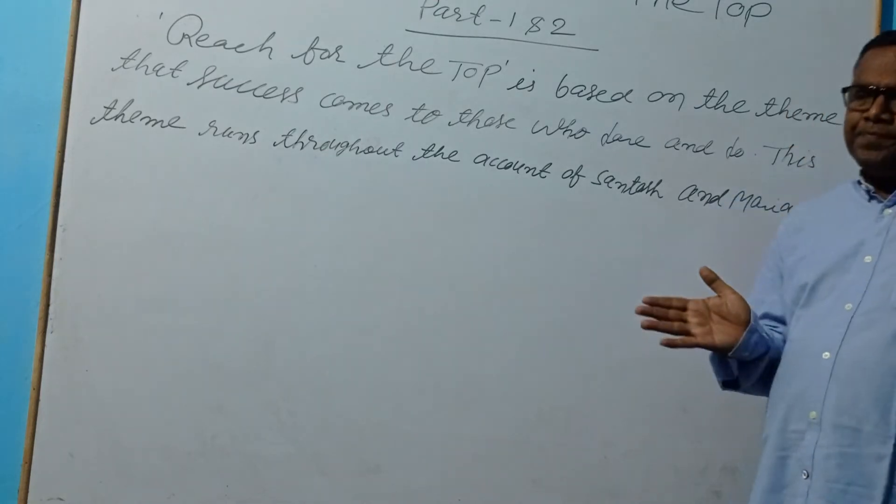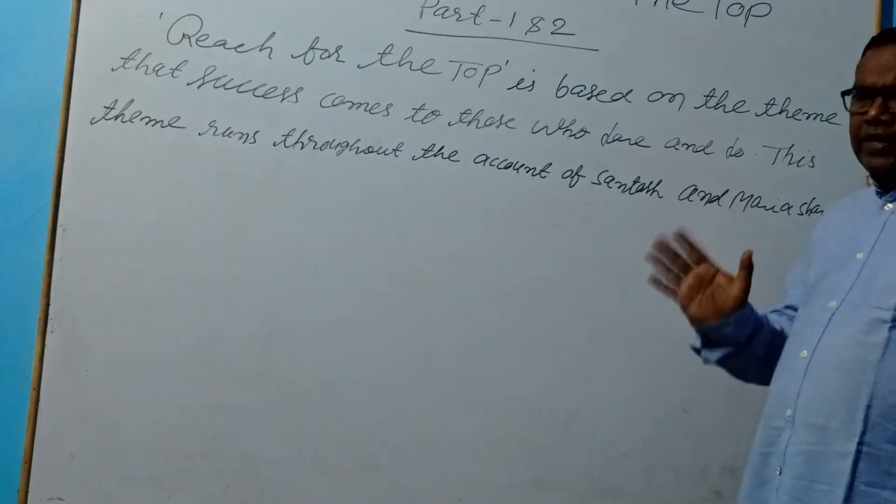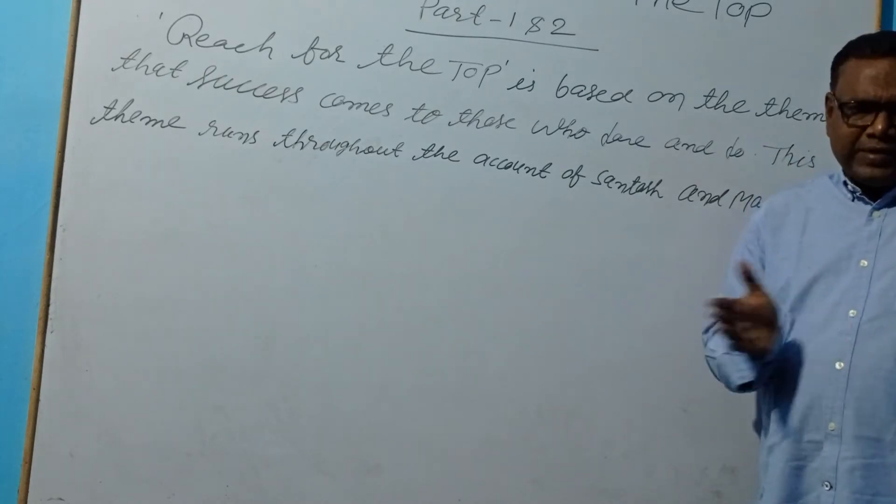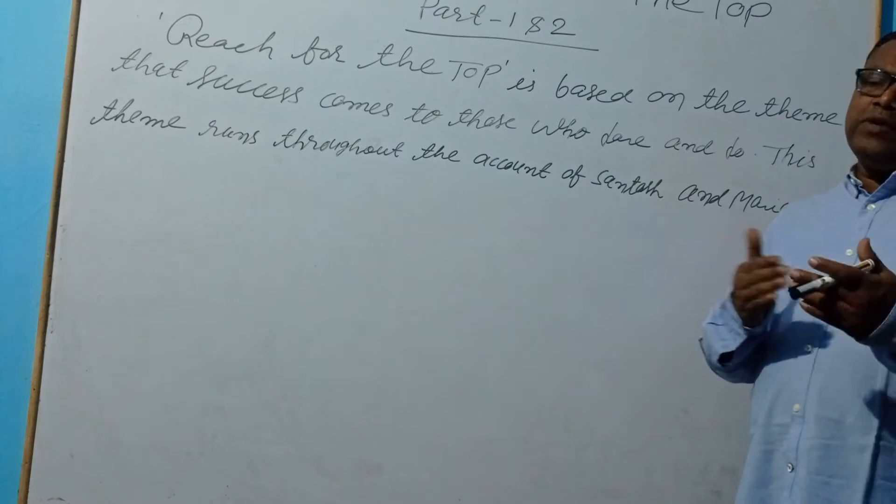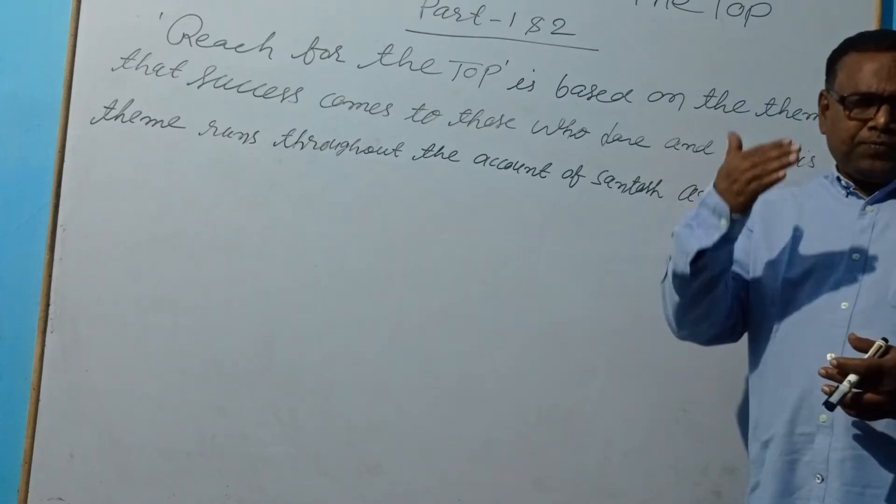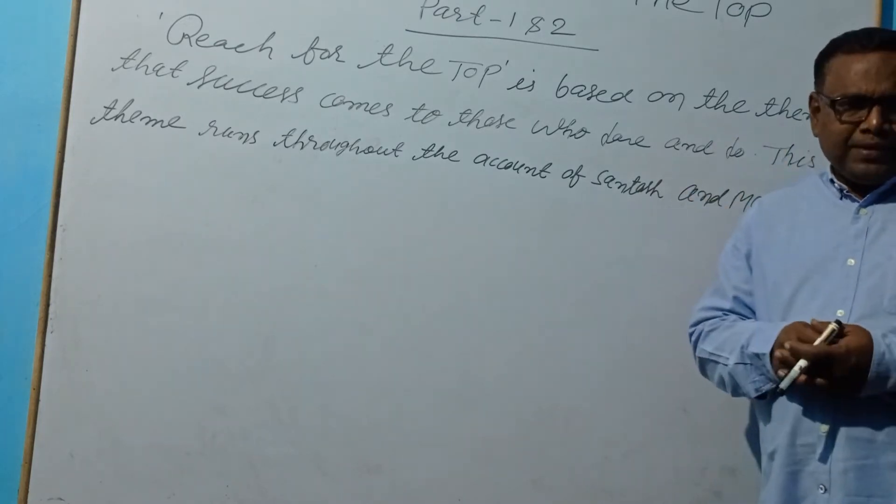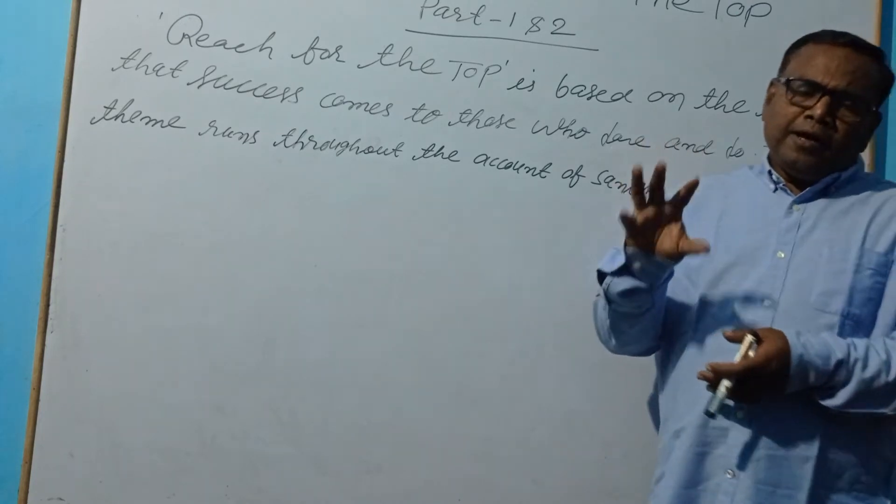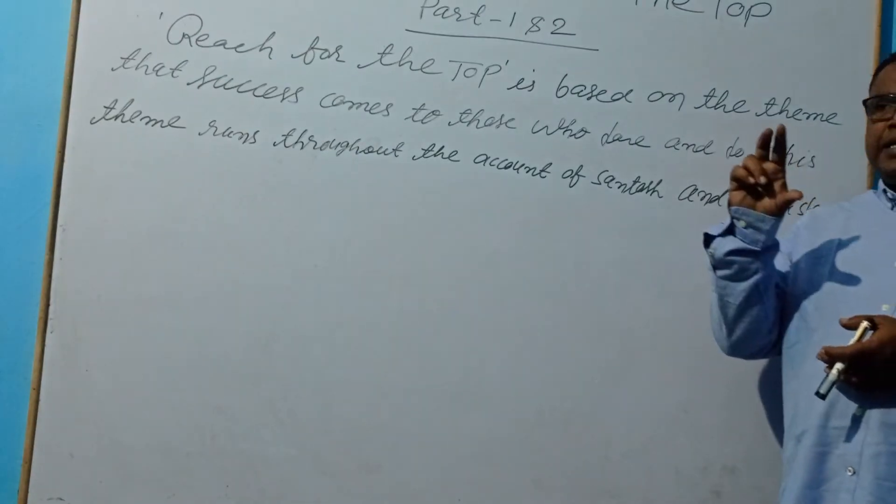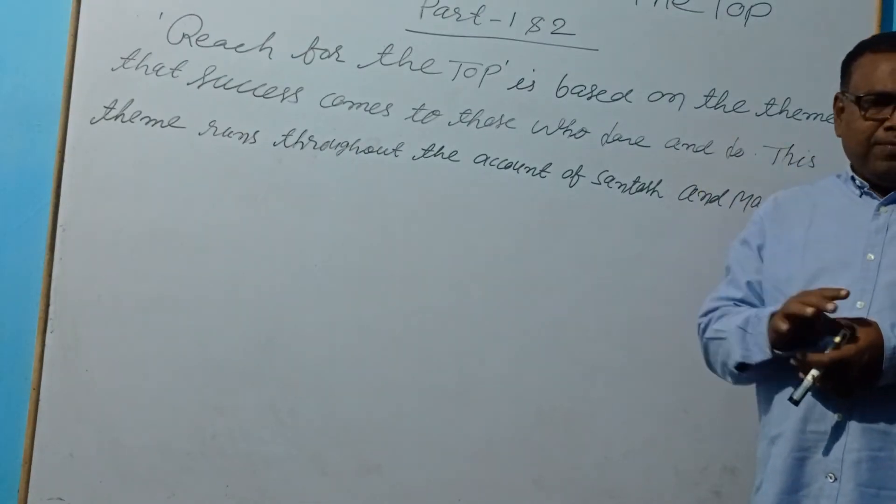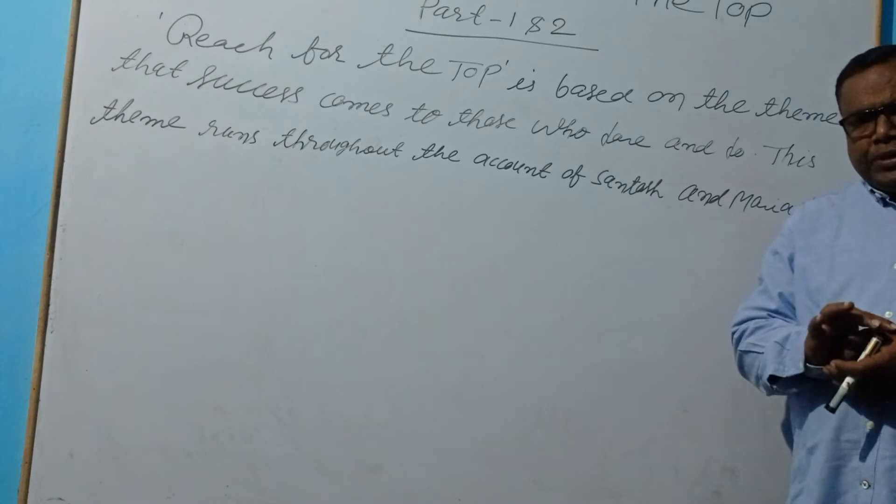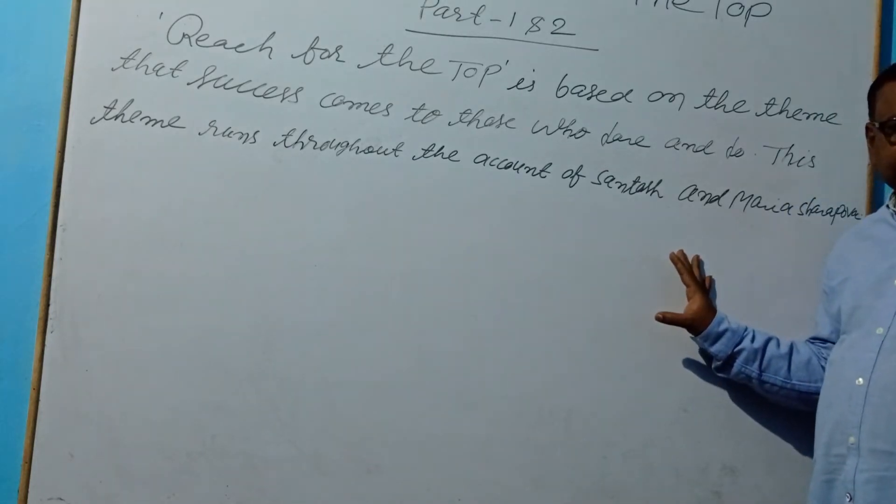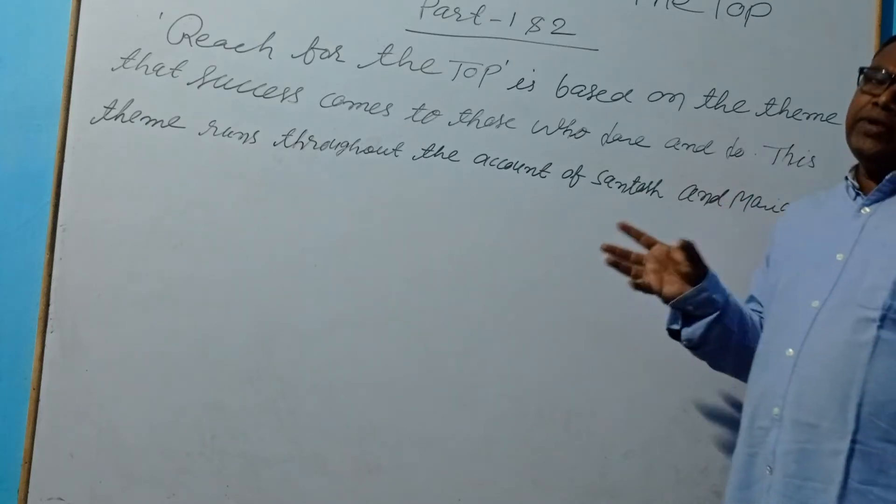Maria Sharapova was also from a very humble background. Her parents were very supportive. This is the difference. The parents of Santosh Yadav became supportive when she resisted, when she opposed the societal norms, societal restrictions, then they became supportive. But we find with Maria Sharapova that her mother, her father, both were very much supportive.